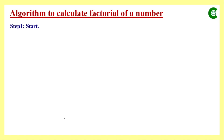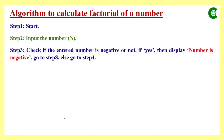Let's write the algorithm. Step 1 is Start. Step 2: input the number whose factorial value we want to find. Step 3: check if the entered number is negative. If it is negative, display that the number is negative — we are not finding the factorial of a negative integer — and stop processing.